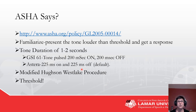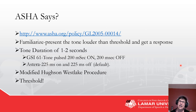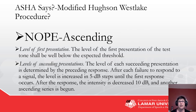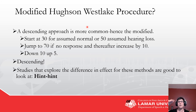You'll hear a lot about the modified Hughson-Westlake procedure. We use it to find threshold by going down 10, up 5, down 10, up 5 — to find that place where 50% of the time they hear it and 50% of the time they don't. ASHA actually recommends ascending rather than descending. Most people start at 30 or 50 dB and do the down 10, up 5 descending, and for most compliant adults descending is going to be fine.